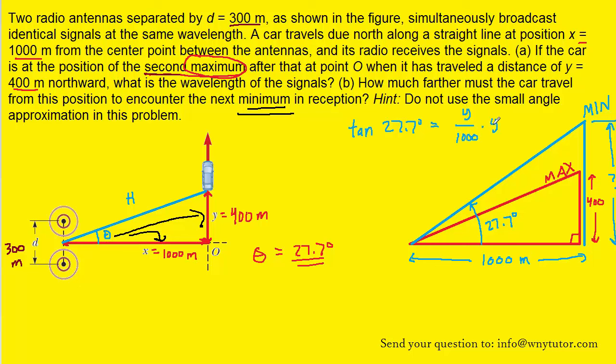Now, if you multiply both sides of this equation by 1,000, you're going to be able to solve for this y, this distance right here, the one that we had marked with a question mark. So you get 1,000 times tangent of 27.7, which on a calculator simplifies to approximately 524 meters. So that distance that we marked y right here is 524 meters.